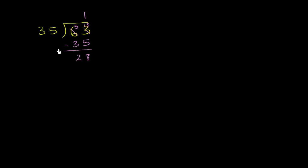So you could just say, hey, 63 divided by 35, let me write this. You could say 63 divided by 35 is equal to 1 remainder 28.